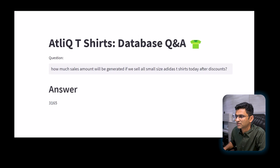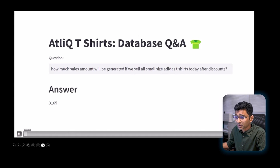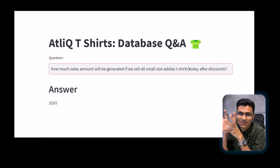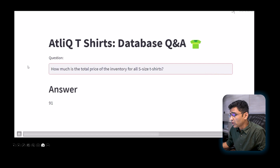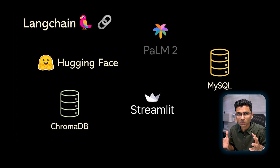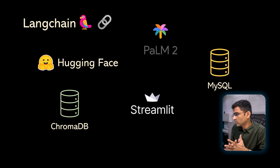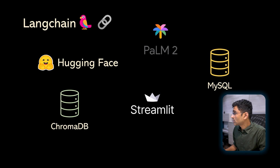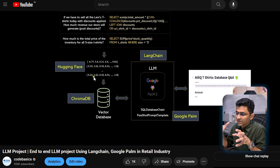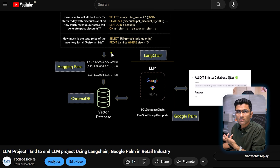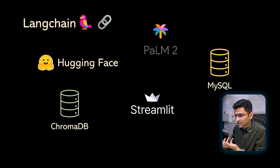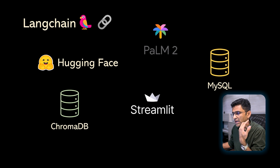The second project is the Retail Insight Generator. We have built a tool in Streamlit where you can ask questions on an SQL database for a retail t-shirt store. You can ask how many t-shirts are left for Nike in whatever size and color, and it will give you the answer. For building this tool, we have used a variety of technologies: Langchain, HuggingFace, Google's Palm2 model which is an open source model, MySQL as a database, Streamlit as the UI, and ChromaDB for a vector database. When someone asks a question in human language, using Google Palm2 we convert that to an SQL query, execute it on the database, and the result is shown on a Streamlit-based UI.